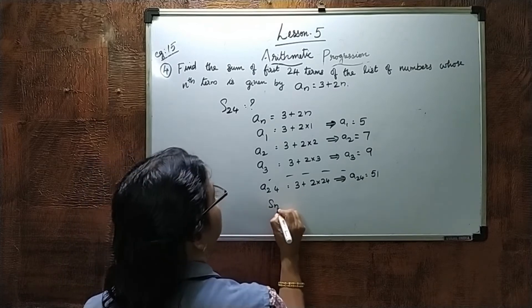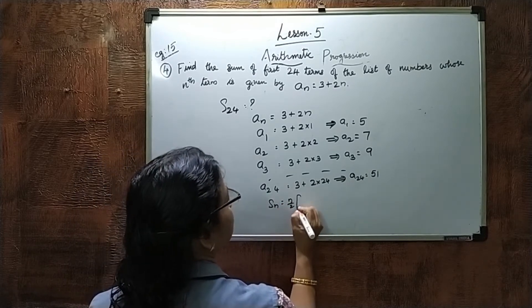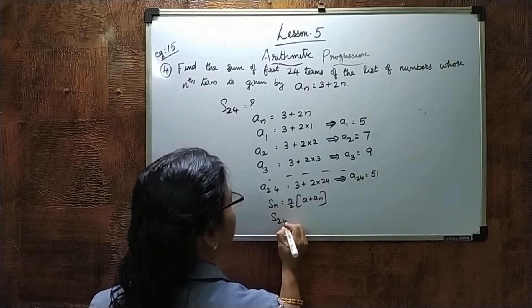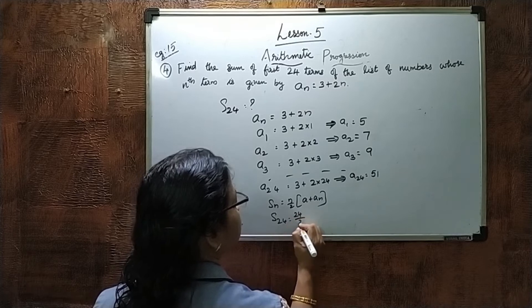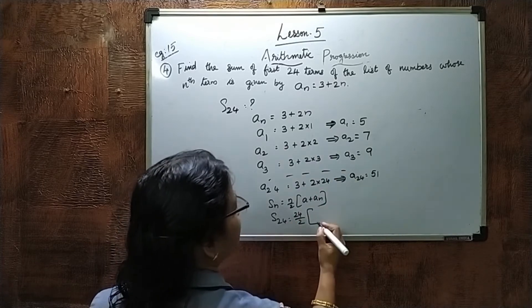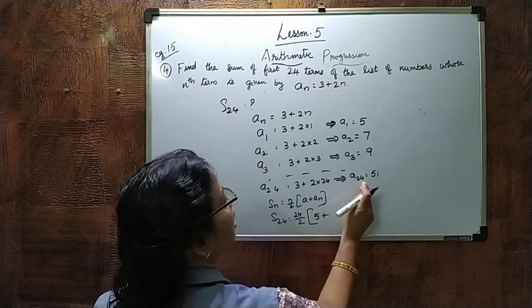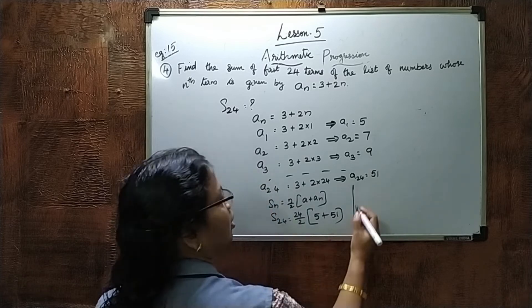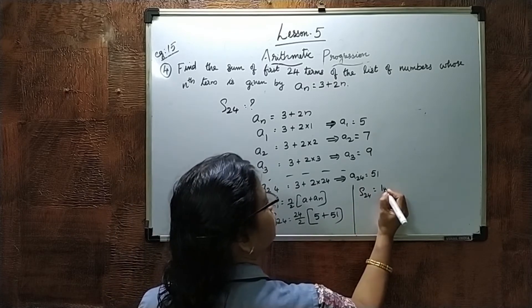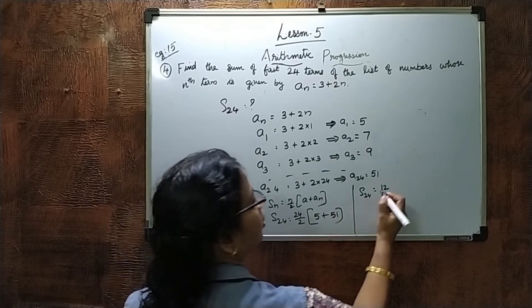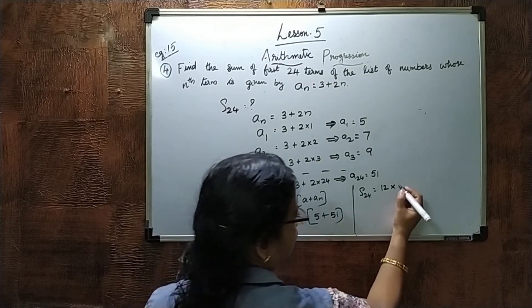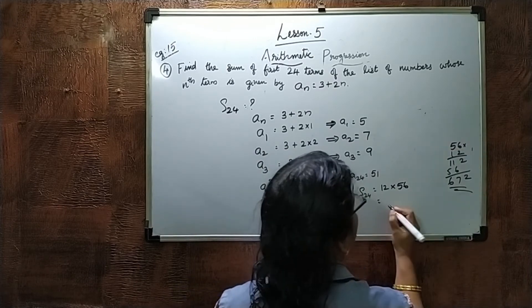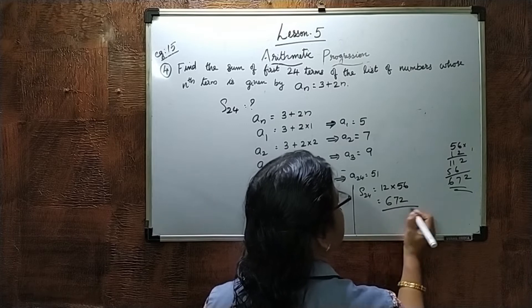So Sn equals N by 2 into A plus An. S24 equals 24 by 2 into first term 5 plus last term 51, which is 12 into 56. So S24 equals 672.